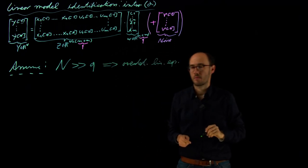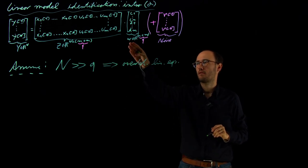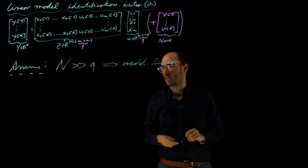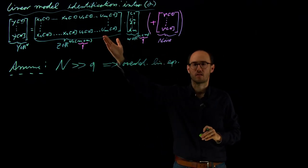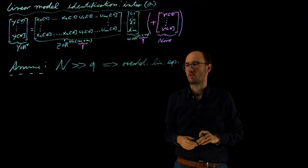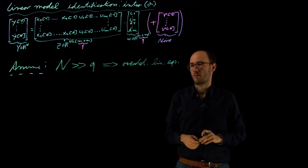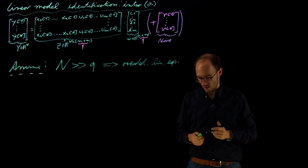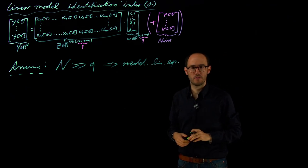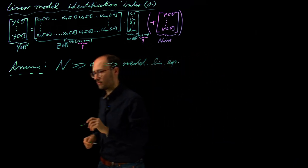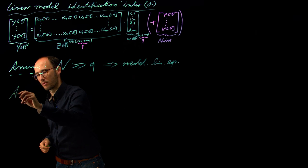That's why we cannot directly solve for q. If that is not a square matrix—if N is significantly larger than q—then we cannot calculate the inverse, and we cannot solve this as a perfectly determined linear equation system. Therefore, we need to come up with another approach, which we discuss in the following: the least squares approach.